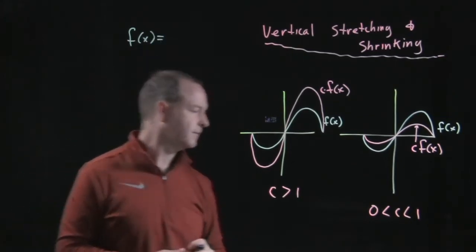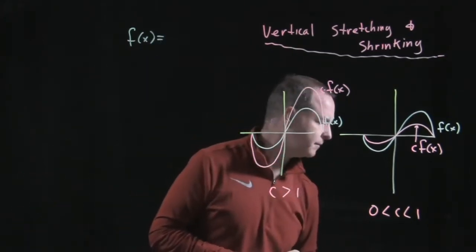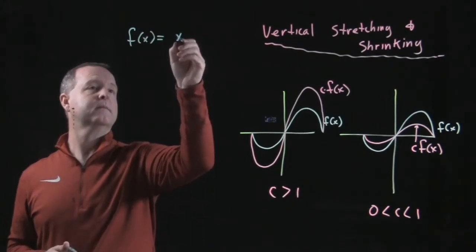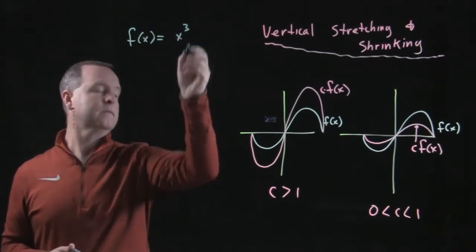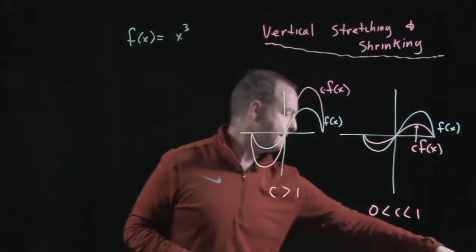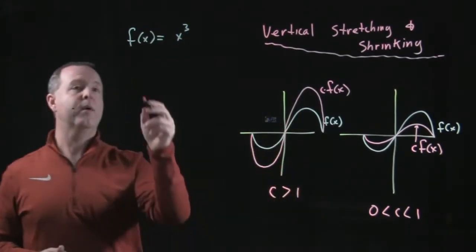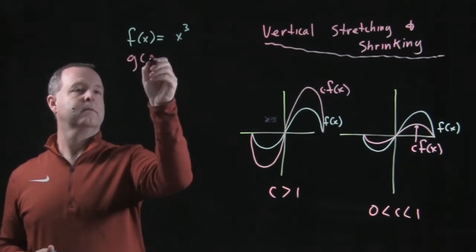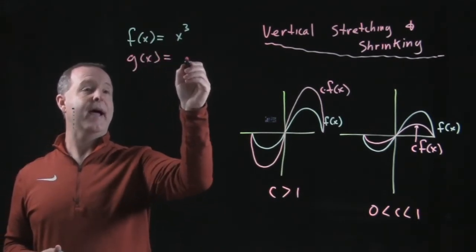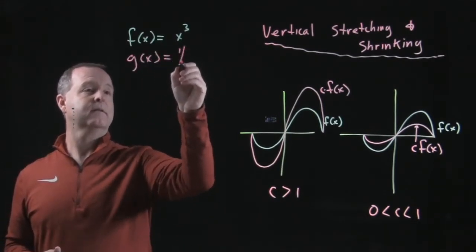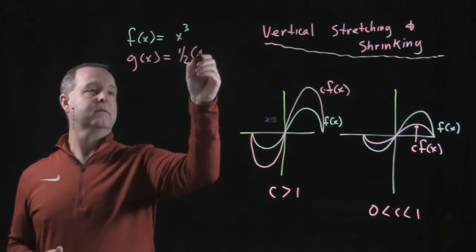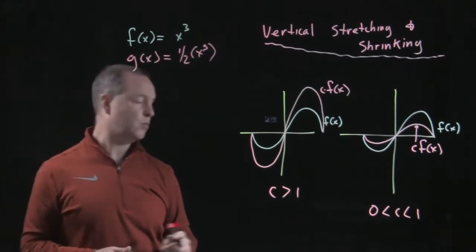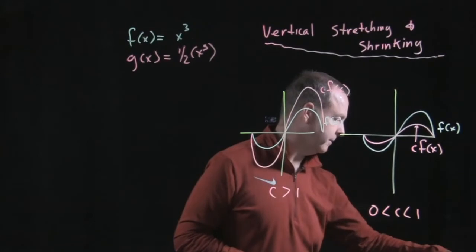Let's look at an example and compare f of x equals x cubed with g of x, where we shrink it by a half. So g of x equals one half x cubed.